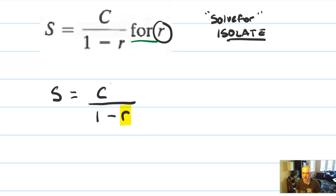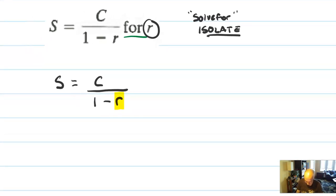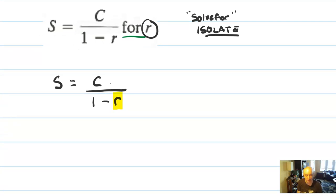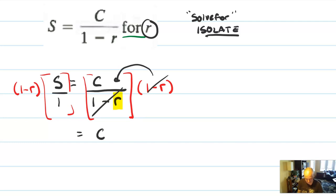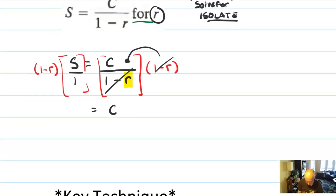We have a problem here, which is that r is on the bottom of a fraction. The best way to handle this is going to be to clear out all fractions. Remember that s is really like s over 1. You have an equation, so you can multiply both sides by anything you want. To clear this out, you should multiply both sides by (1 minus r). The right side will be easier, because 1 minus r will reduce out and you're just left with the variable c. On the other side, we have (1 minus r) times s, so that's going to be (1 minus r) times s. We've at least cleared out the fractions.